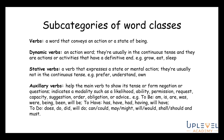Auxiliary verbs, also known as helping verbs, help the main verb to show its tense, form negation, or questions. They indicate modality such as likelihood, ability, permission, request, capacity, suggestion, obligation, or advice. For example: to be — am, is, are, was, were, being, been, will be; to have — has, have, had, having, will have; to do — does, do, did, will do; and modal verbs can, could, may, might, will, would, shall, should, and must.